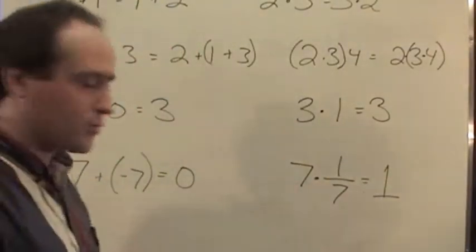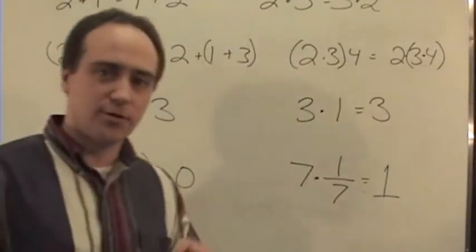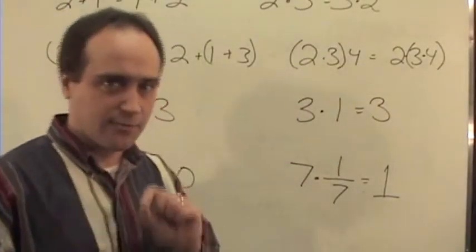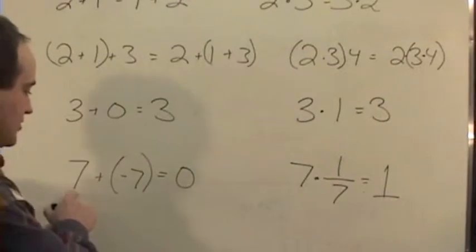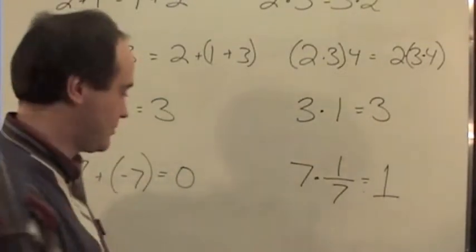Then there's the inverse property. If you add something to its inverse, if you add a number plus its negative, you get 0. So 7 plus negative 7, or 7 minus 7, is 0.